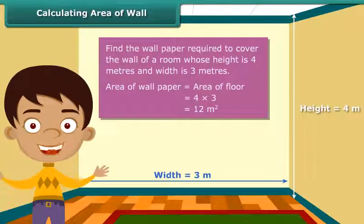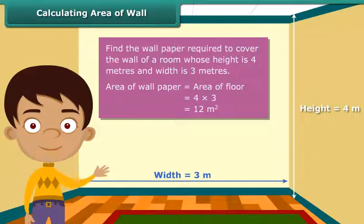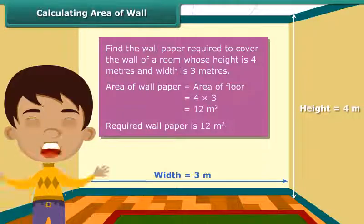The area of the wall is 4 meters multiplied by 3 meters, which is 12 square meters. So 12 square meters of wallpaper will be required to cover the wall of Nidhi's room.